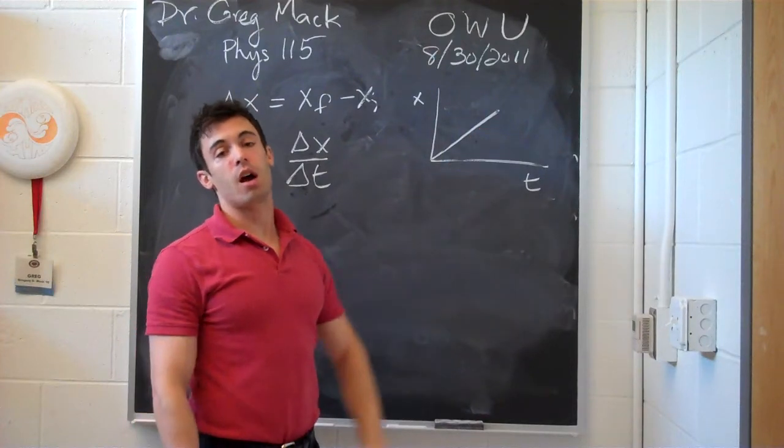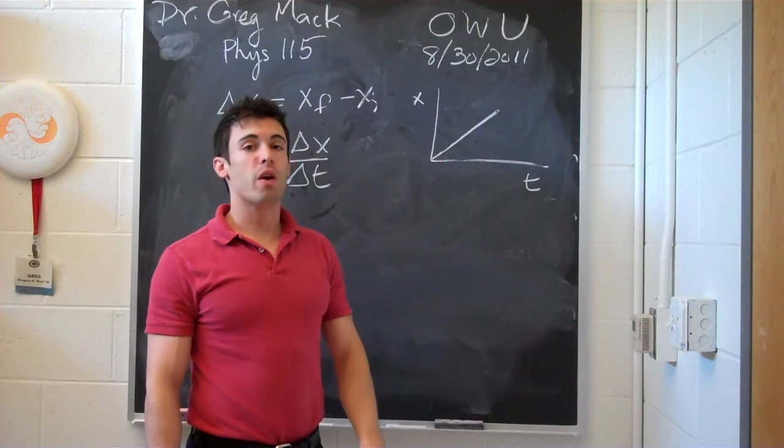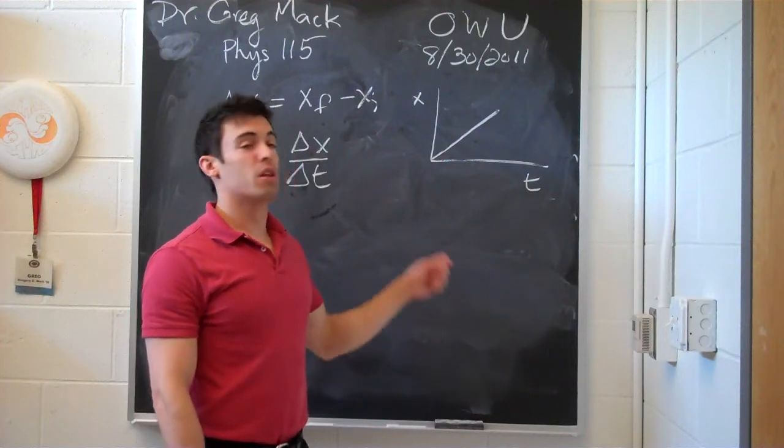If you have a graph instead of v versus t, then the area under that curve is going to be your displacement.